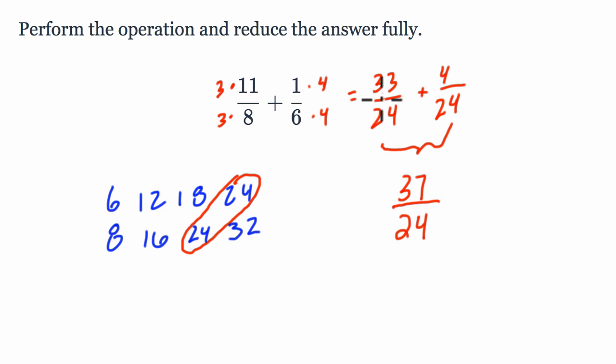This first fraction is 33 twenty-fourths. So how many 24ths is it? It's 33 of them. In the second fraction, we have 4 twenty-fourths. So altogether, we have 33 and 4 twenty-fourths, which is 37 twenty-fourths.